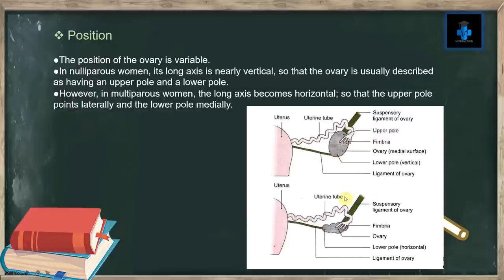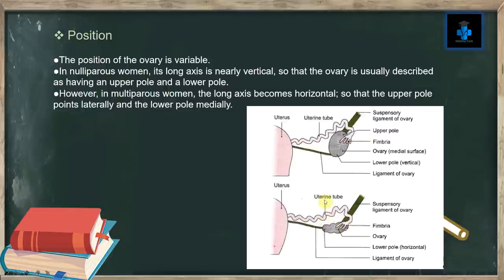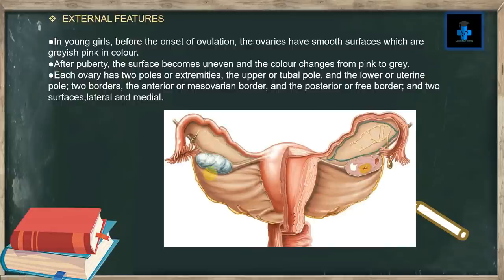In the lower part it becomes medially pointed. Here you can appreciate an ovary of an early parous woman — this is the upper pole, this is the uterine tube, and this is the ligament of the ovary. Likewise, this is the horizontally placed long axis with the uterine tube and suspensory ligament, all of which can be appreciated clearly.